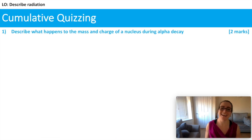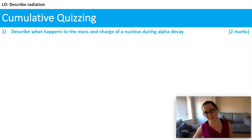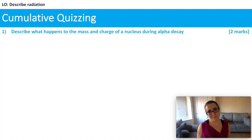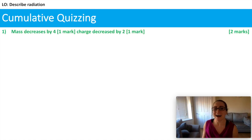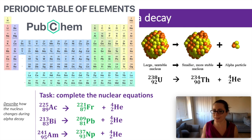Let's do a cumulative quiz first. An exam-style question: describe what happens to the mass and the charge of a nucleus during alpha decay. We've got two marks available — tell me what happens to the mass, include a number; tell me what happens to the charge, include a number. Pause if you need more time. Mass decreases by four. Charge decreases by two. Nice and easy. And if we look at the periodic table we can see that when the charge decreases by two — uranium to thorium — we just skip along two places to the left. So it's quite nice using the periodic table to predict what you'll get from alpha decay.